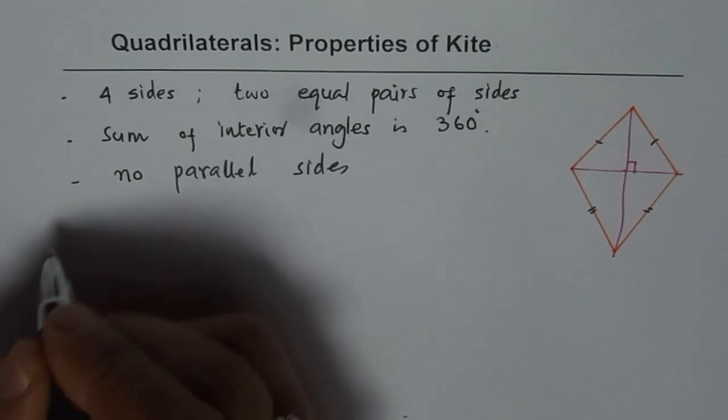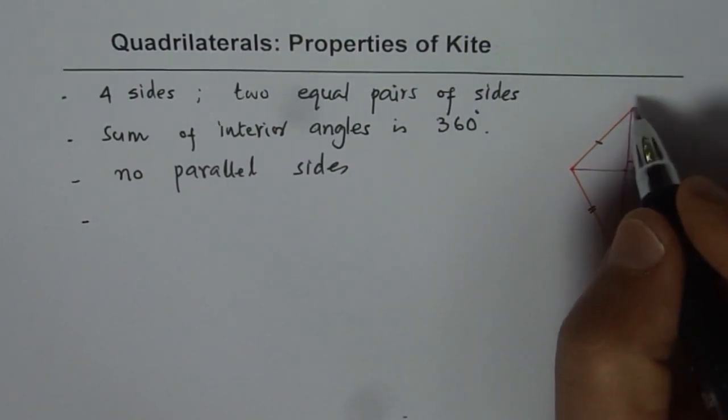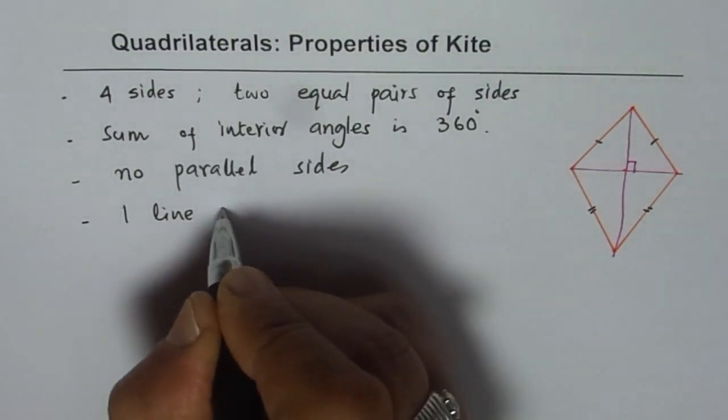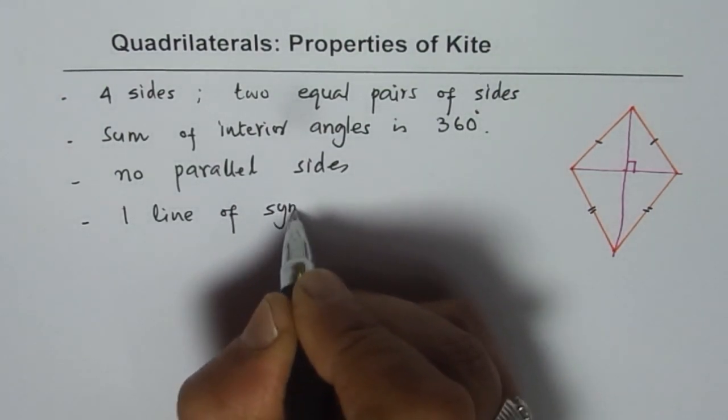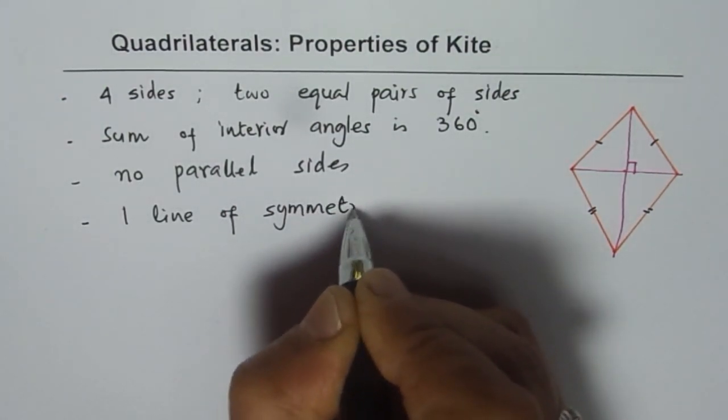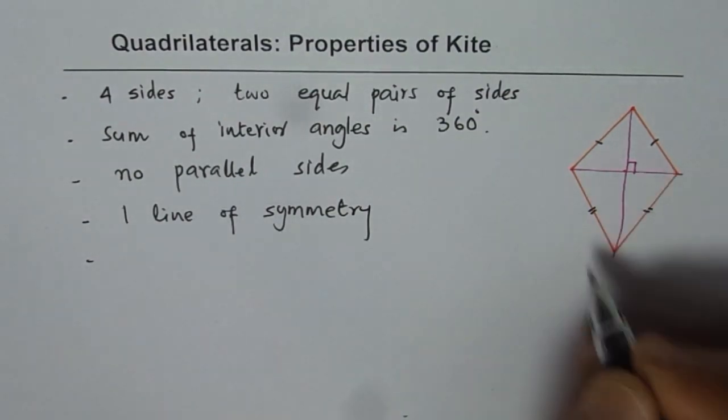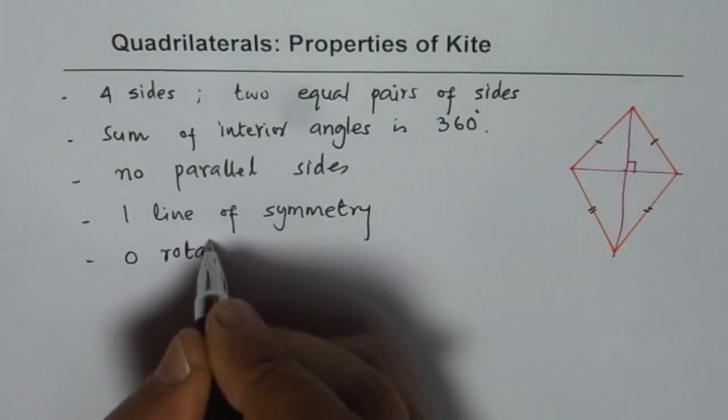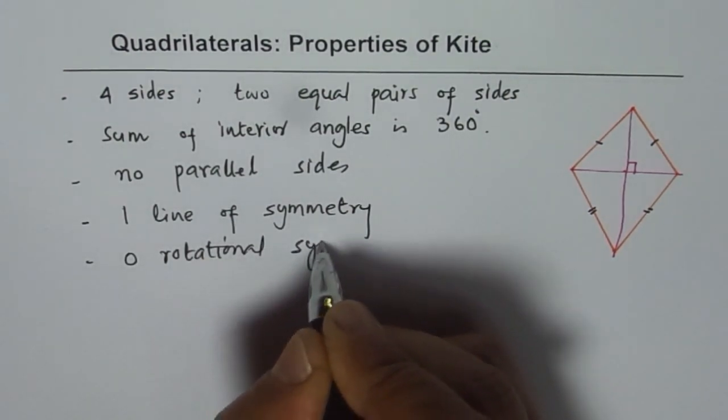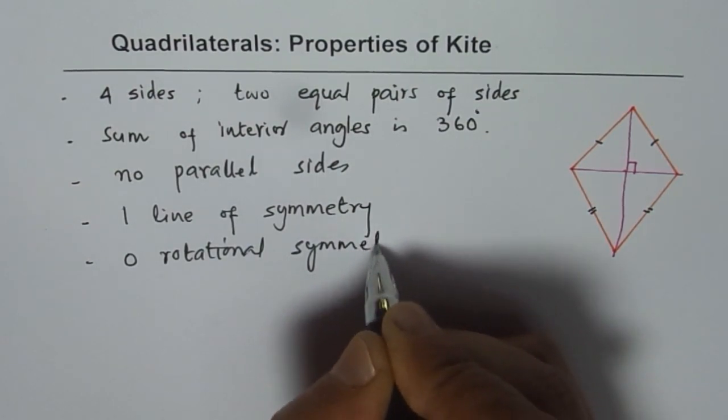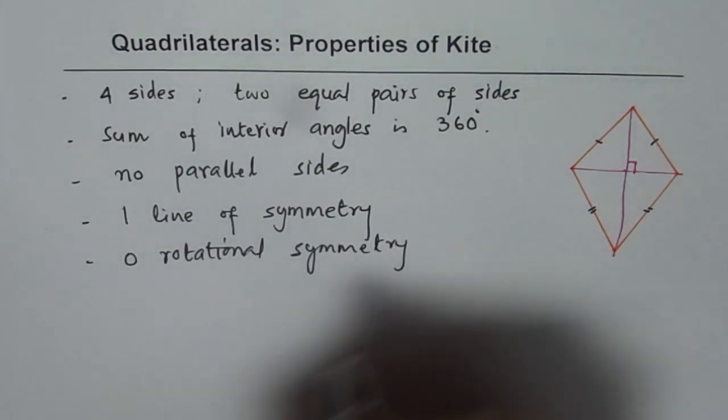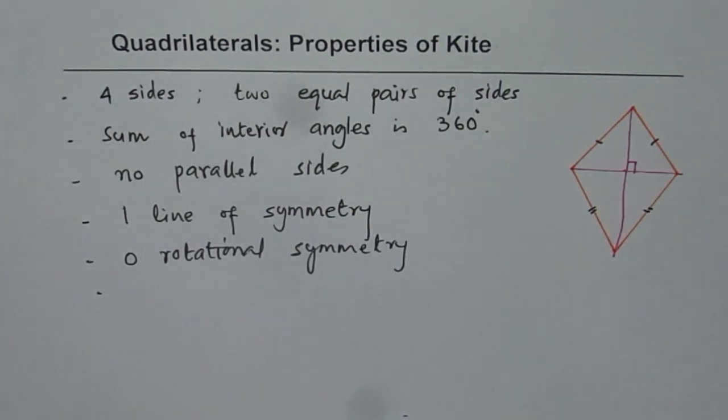How about lines of symmetry? It has one line of symmetry. And how about the rotational symmetry? It has zero rotational symmetry. Can you name another quadrilateral which has zero rotational symmetry? Name one. You have just learned about it.